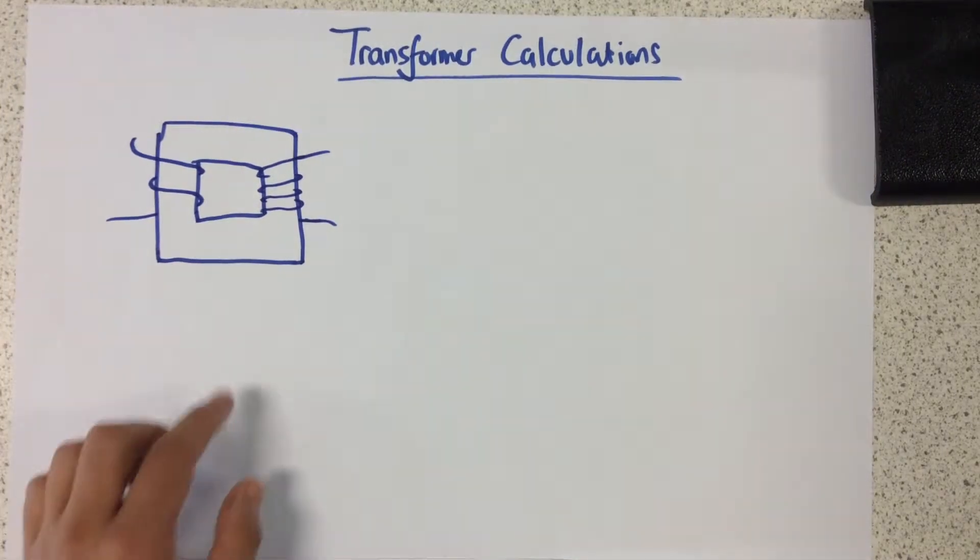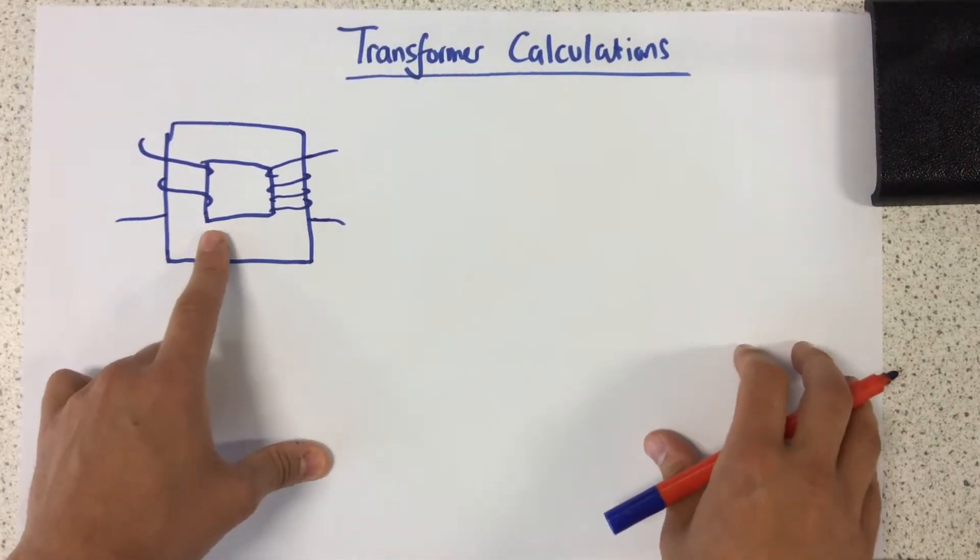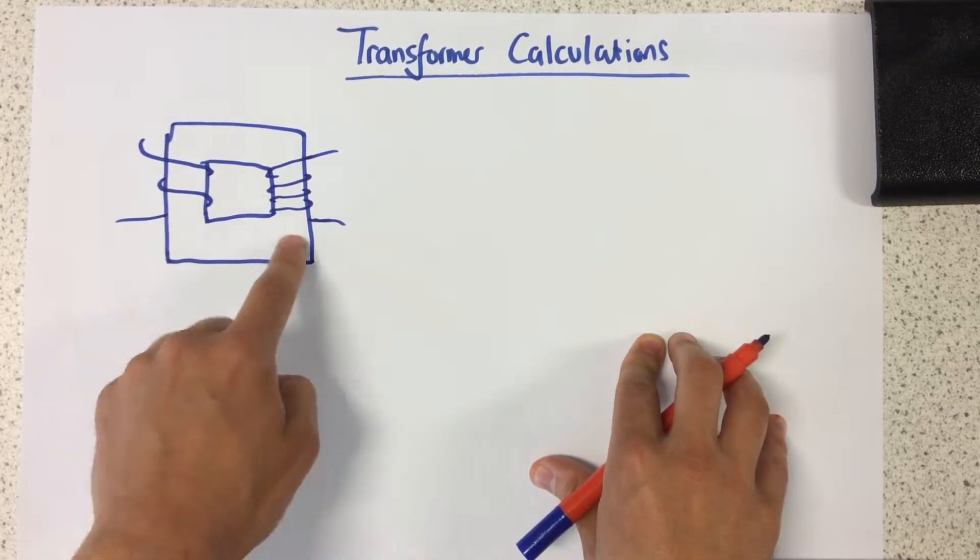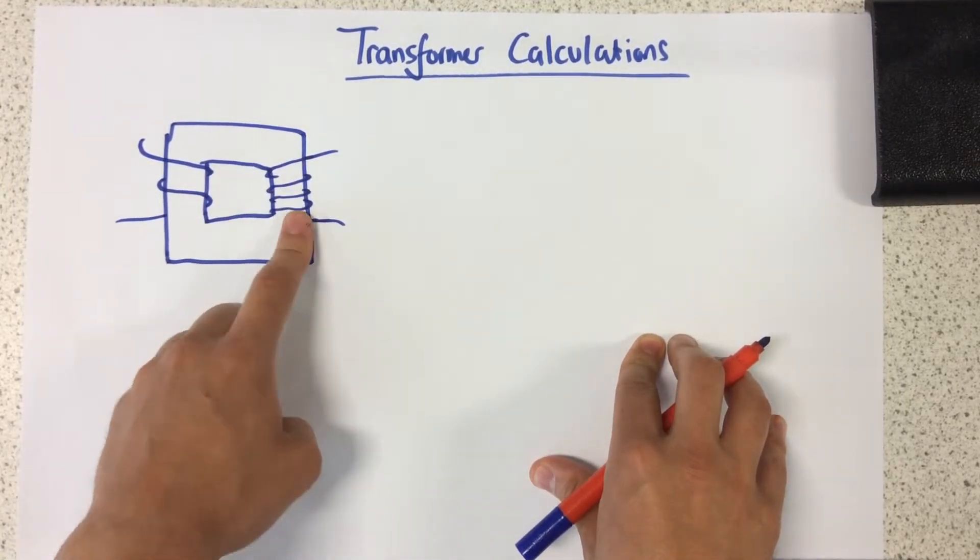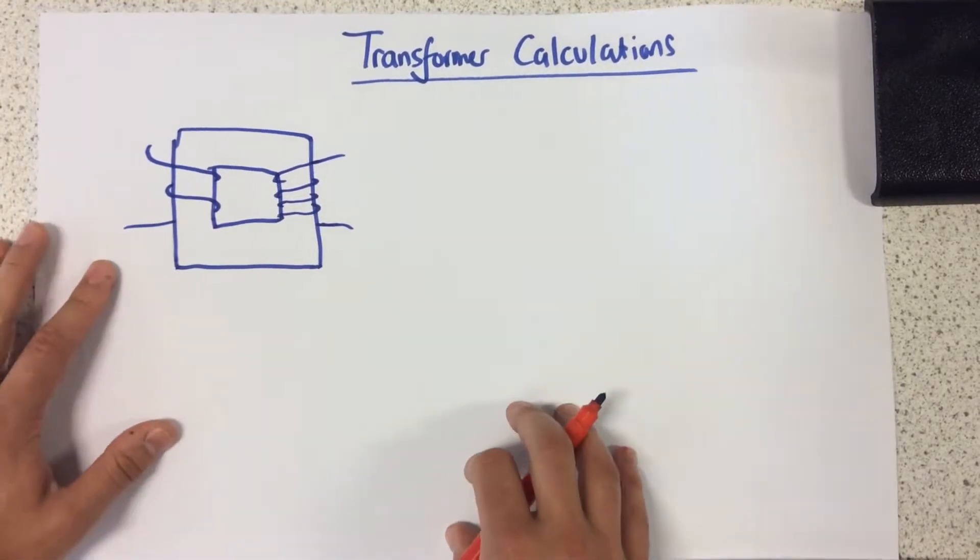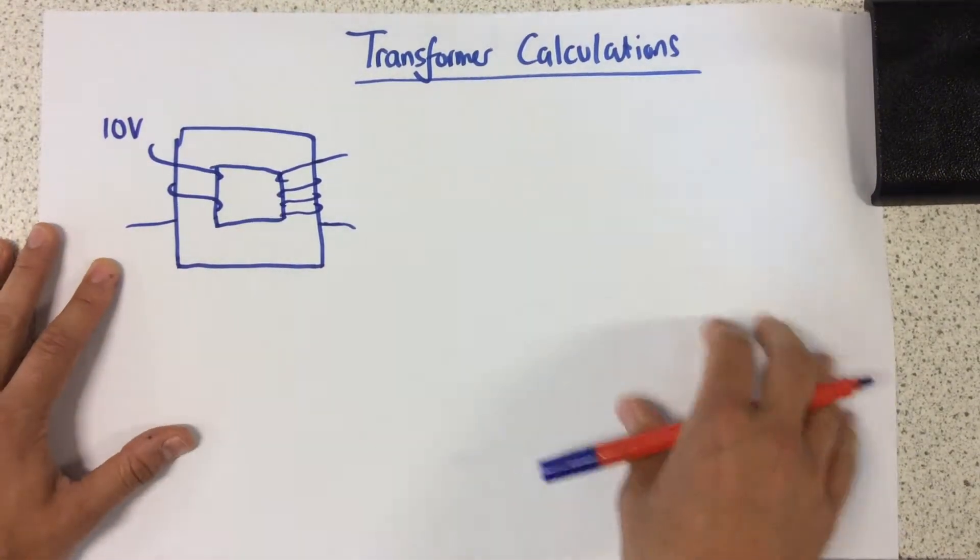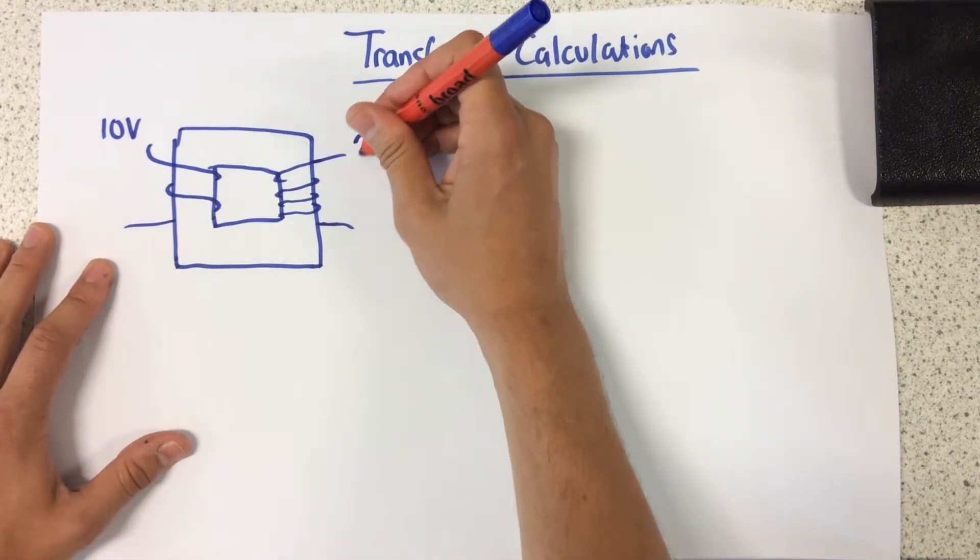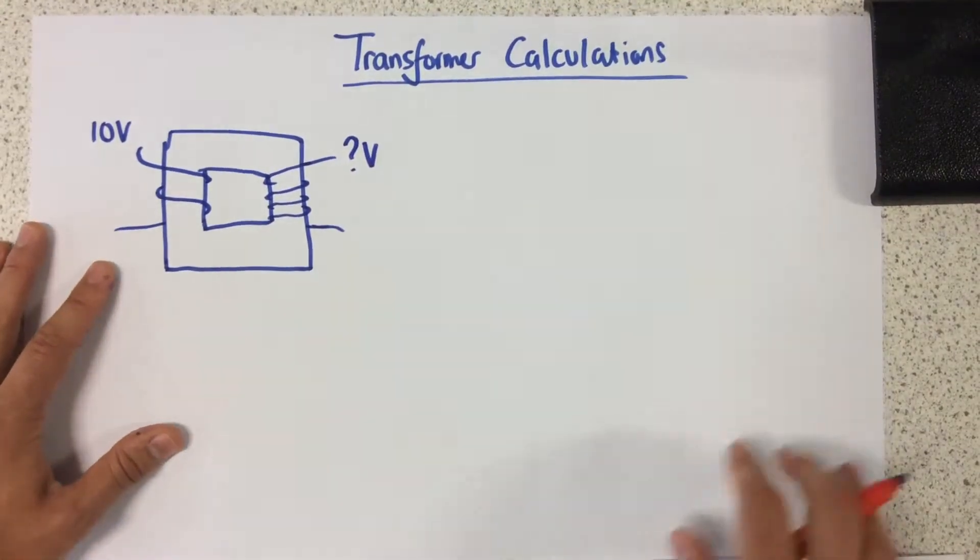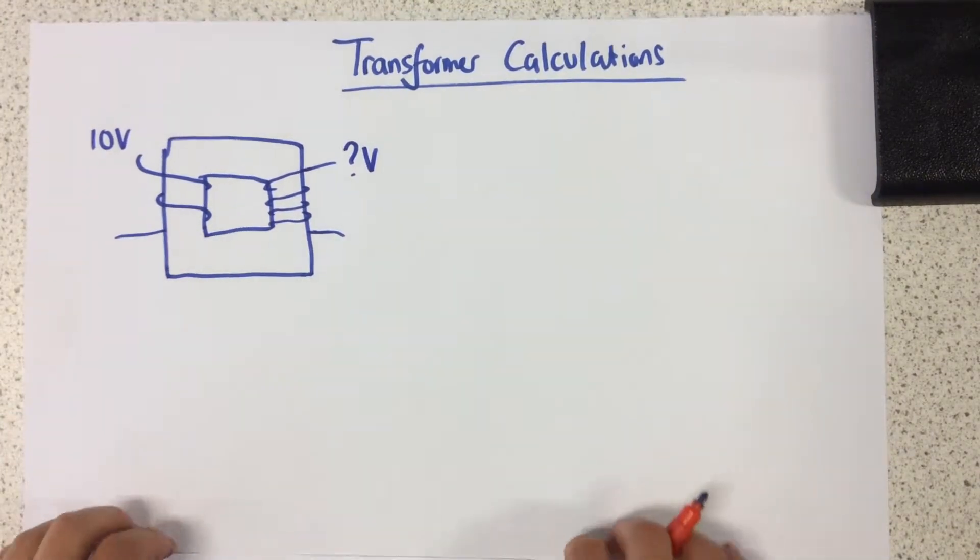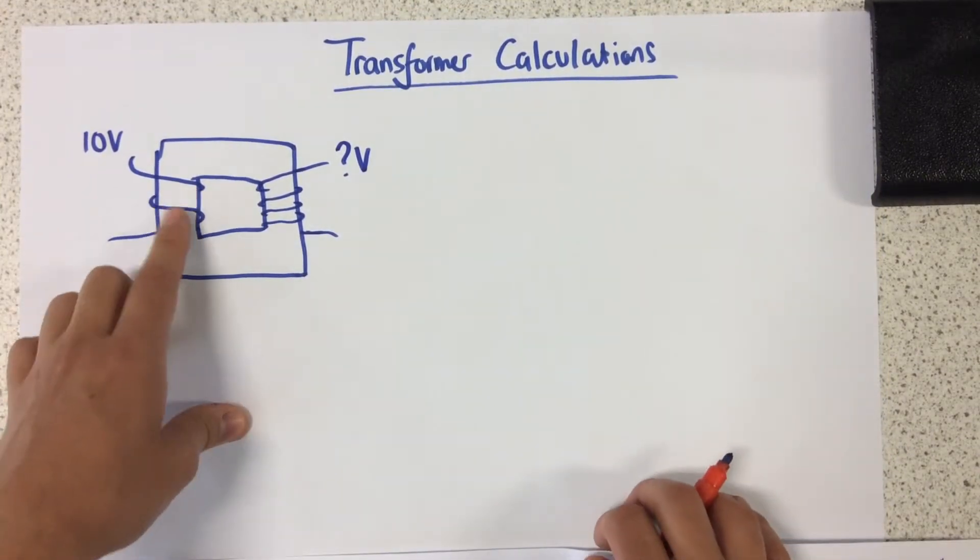Okay, so let's imagine first of all we've got this transformer here. I can tell that this is a step-up transformer because it's got more turns on the secondary coil compared to the primary coil. Let's just imagine we've got 10 volts that we start off with here. And we're trying to find out the number of volts, the potential difference on this side here after using this transformer.